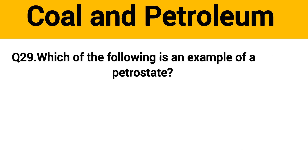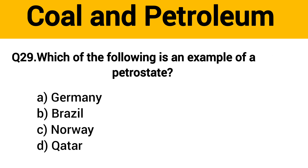Question No. 30. Which of the following is an example of a petrostate? The right answer, Option D: Qatar.